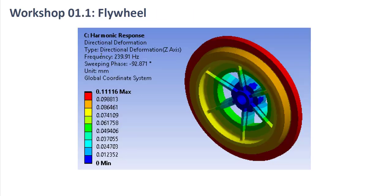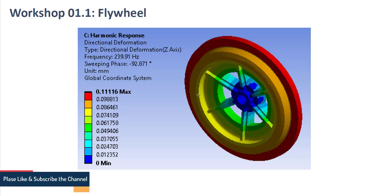In the next tutorial we are going to do a harmonic response analysis. It will start with a static model where we apply boundary conditions and rotational speed, then proceed to modal analysis where we obtain mode shapes, and finally the results feed into harmonic response analysis where we will apply some acceleration. Thank you.